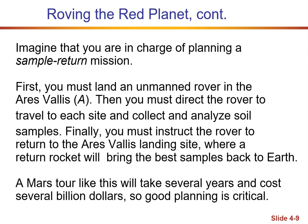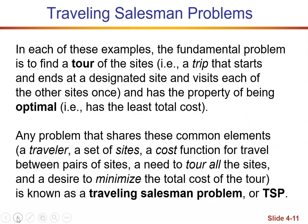You must first land at A and go back to A to take your samples. In each of these examples, the fundamental problem is that we have a tour of the sites: it starts and ends at a certain site and visits each of the other sites once. We also want it to be optimal — the least cost. That cost can change depending upon what we're talking about; it could be cost of money, it could be time, whatever makes it optimal.